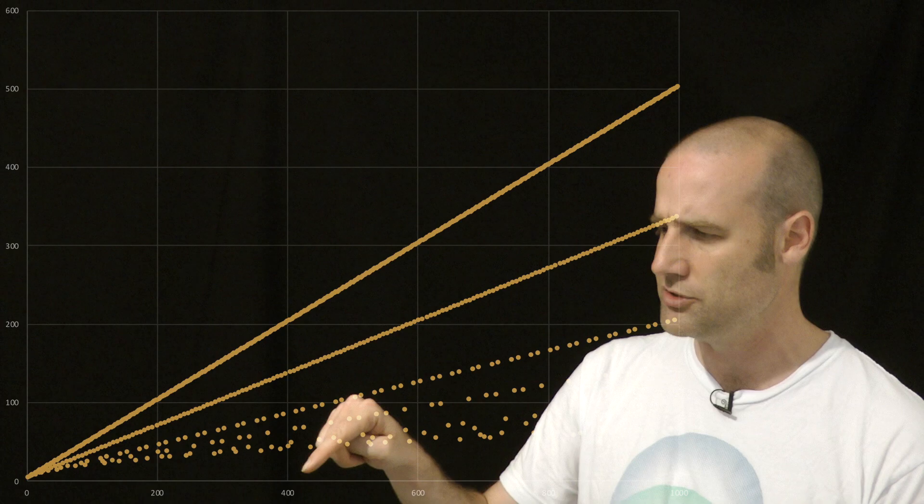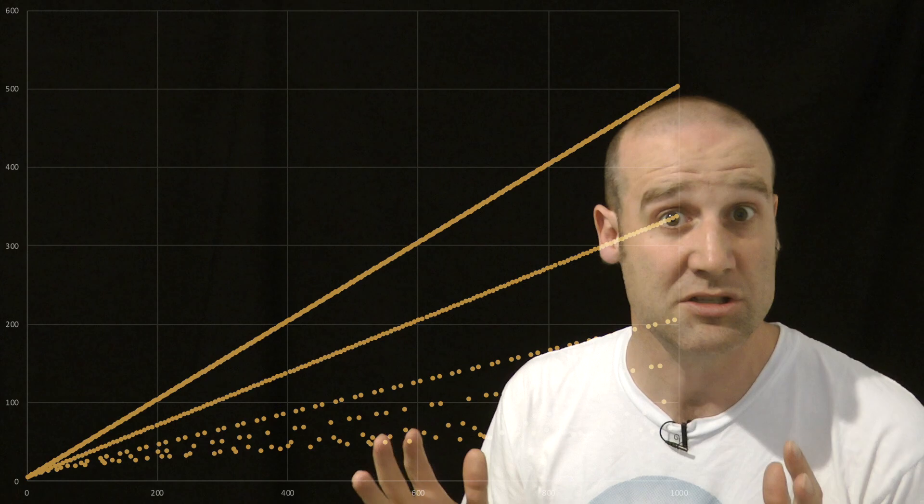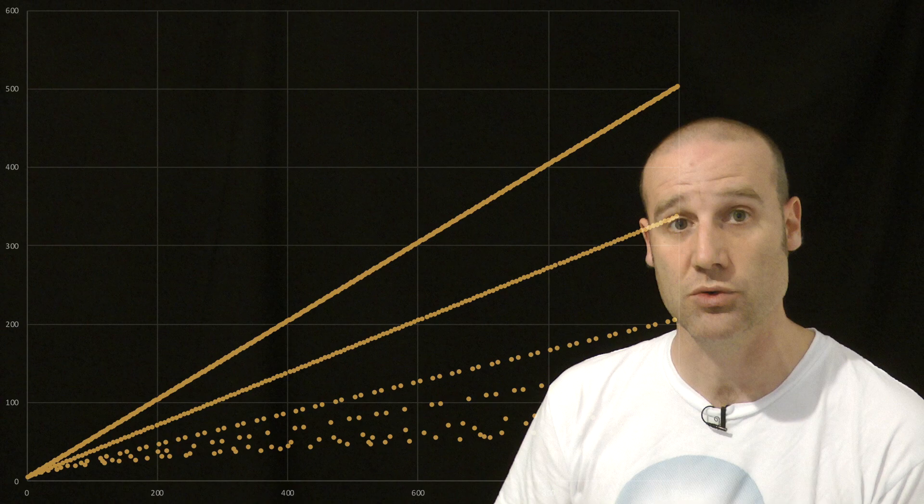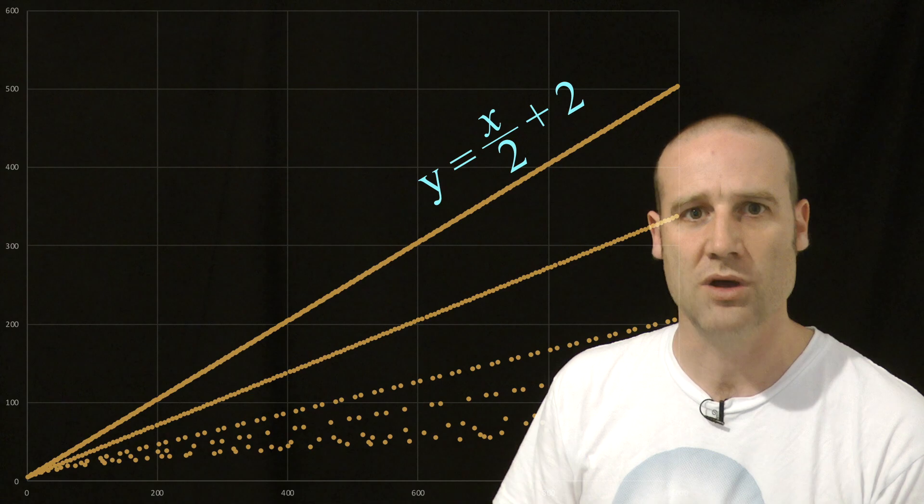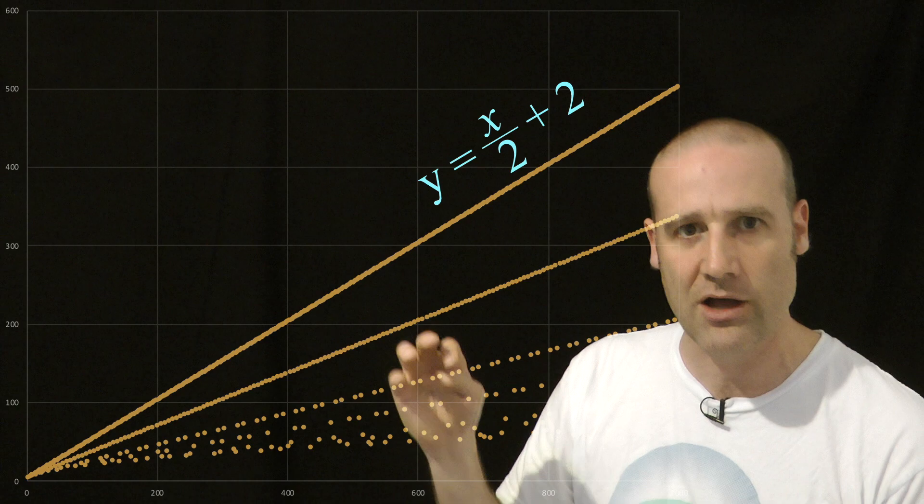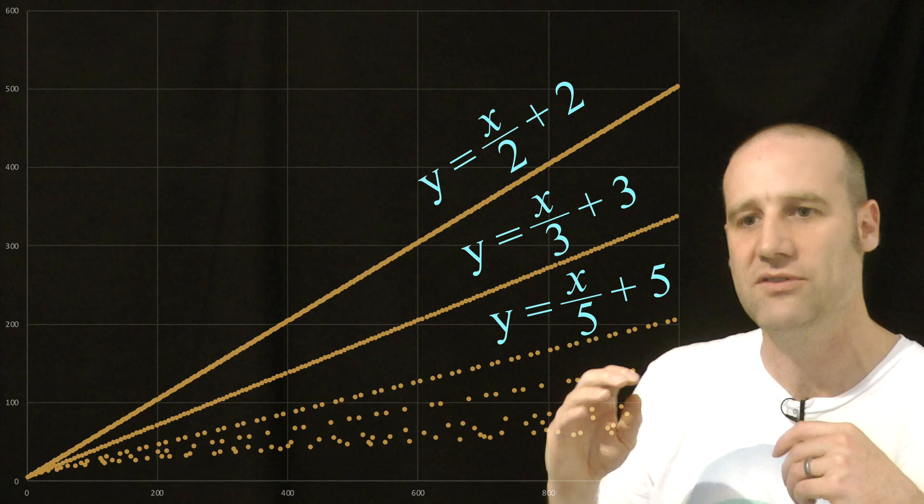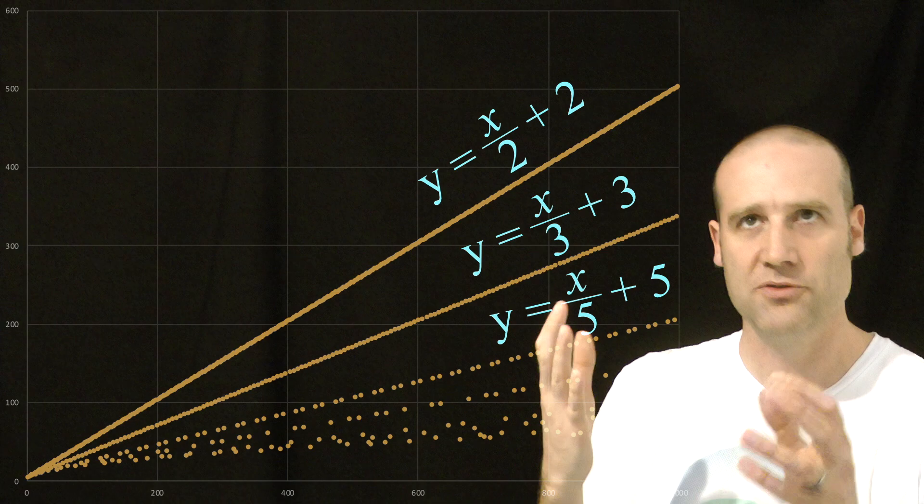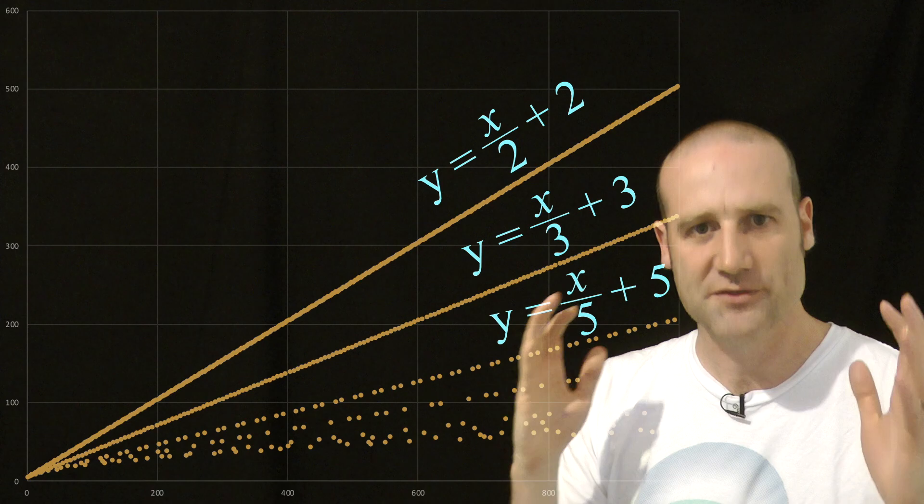For an even number, the biggest factor it can have is half of it, and then the other factor is 2. So 400 goes up to 202. That top line going down is the line of half the number plus 2. For numbers which aren't even but have a factor of 3, that's a third of the number plus 3. Each of these lines is a different prime factor, and for a number, it falls on its biggest prime factors line.